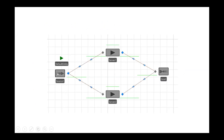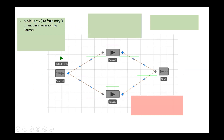The model I'm going to build is going to be very simple with just a few objects. It's going to have a source with a default entity coming in and being generated. It can travel to either server one or server two to be processed, and then leave the system through sink one. A random processing time using random.normal with a mean of 10 and standard deviation of 2 is assigned to the state variable model entity dot time server.